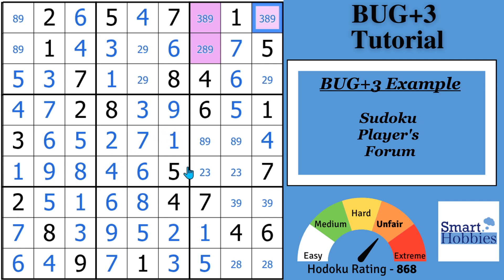Our example comes from the Sudoku Players Forum, and what you may notice is I've got three cells highlighted here in purple. Since we have three cells that have additional candidates in them, this is a BUG+3.